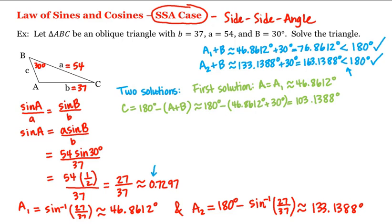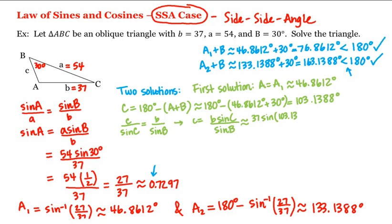Now that we know capital C, we can find little c by using the law of sines again. That is, c divided by sine of capital C equals b divided by sine of capital B, or c equals b times sine of C divided by sine of B, which is approximately 37 times sine of 103.1388 degrees divided by the sine of 30 degrees. Using our calculator, we get that this is approximately 72.0629.